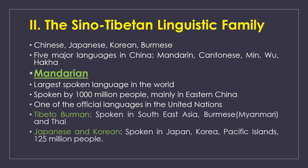South East Asian languages such as Burmese from Myanmar are also part of the Sino-Tibetan family, covering Thai regions. Japanese and Korean are associated with this family and spoken in Japan, Korea, and Pacific Islands, with about 1,200 million people using these languages.